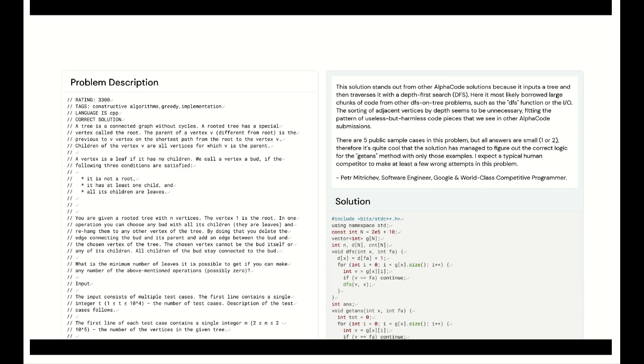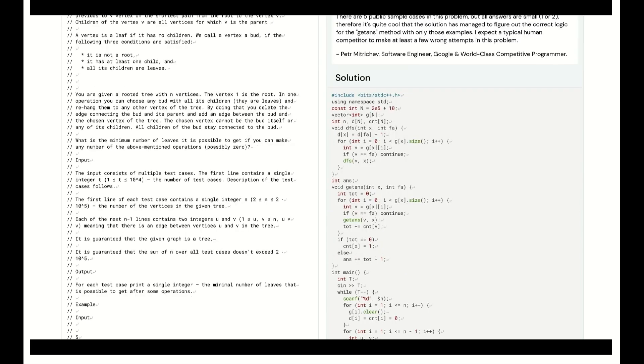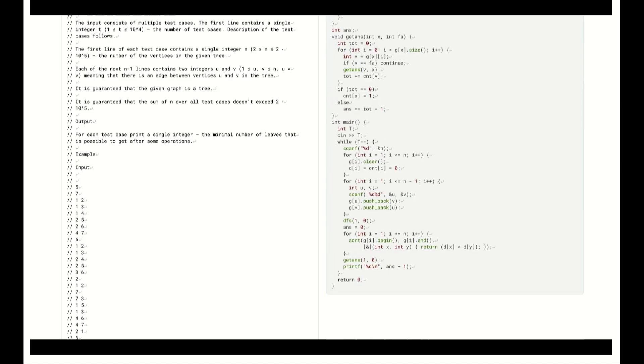And so on the surface, the coding capabilities of these systems are really, really good. Here's an example of the kind of code that AlphaCode can actually write. And I don't expect you to actually see the details of this code, but just to notice how much code this is. This is a complicated, intricate algorithm and a tricky piece of code that the system is actually able to produce completely on its own.